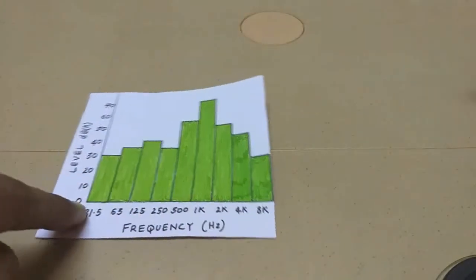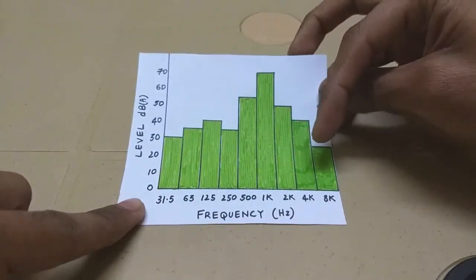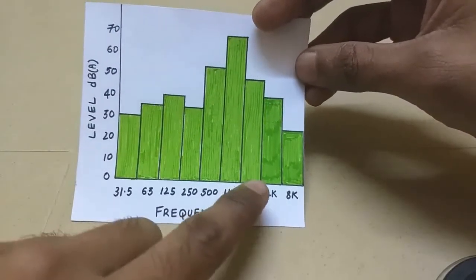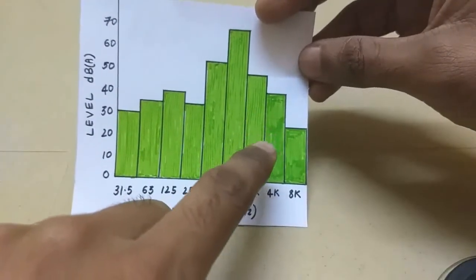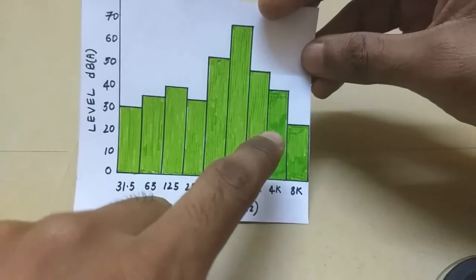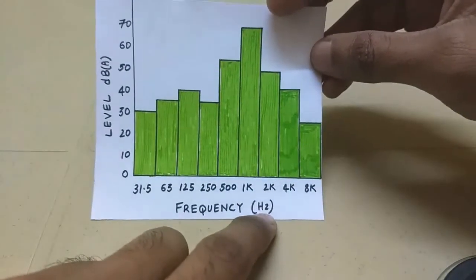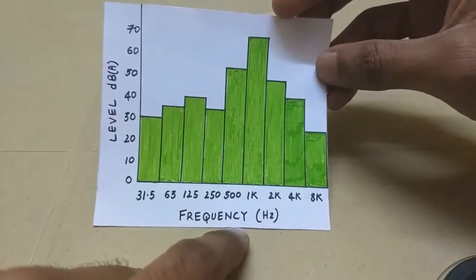Alright, and one disadvantage regarding octave band is as you go to the higher frequencies, for example this band, you don't get much accuracy. For example this band is 4,000 Hz long. So if there is a frequency component, there is a problem with 6,000 Hz or 5,500, it may not get pinpointed, it's a crude analysis.